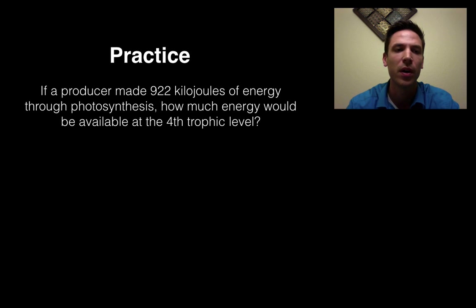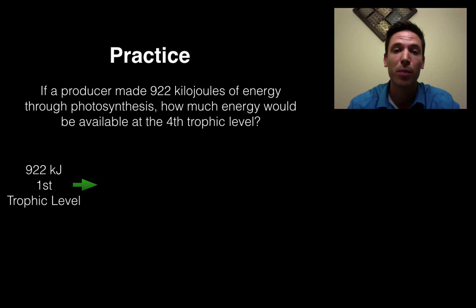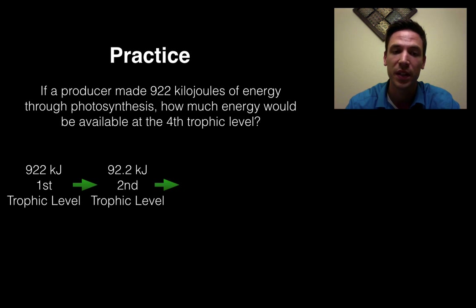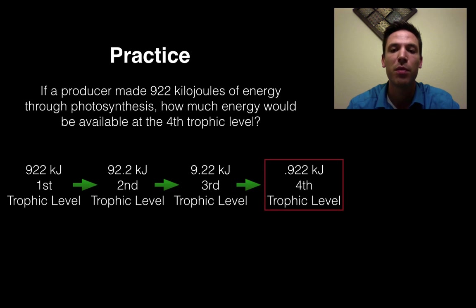Let's try one more practice problem. If a producer made 922 kilojoules of energy — a kilojoule is just a measurement of energy — through photosynthesis, how much energy would be available at the fourth trophic level? Pause the video and try it out. Our first trophic level, the producer, has 922 kilojoules. The second trophic level gets 92.2 kilojoules. The third trophic level gets 9.22 kilojoules. That means the fourth trophic level is only left with 0.922 kilojoules. Only 10% moves on each time; the other 90% gets used up.